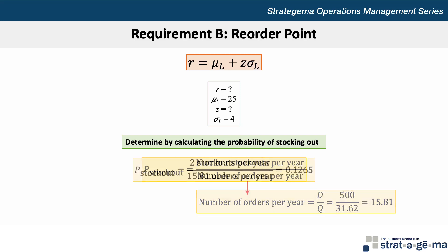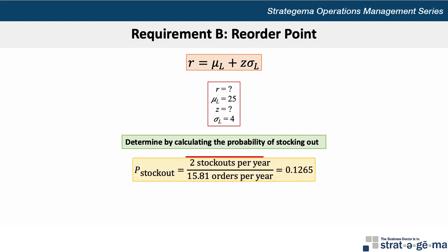Now we can determine the probability of stocking out to be 2 stockouts per year divided by 15.81 orders per year, which yields 0.1265 or 12.65%. If we subtract this from 1 or 100%, that gives us 0.8735, which is the probability of not stocking out, and is the same thing as maintaining a service level of 87.35%.